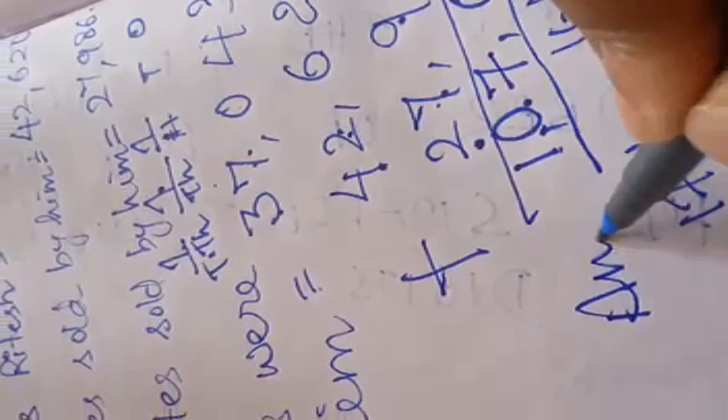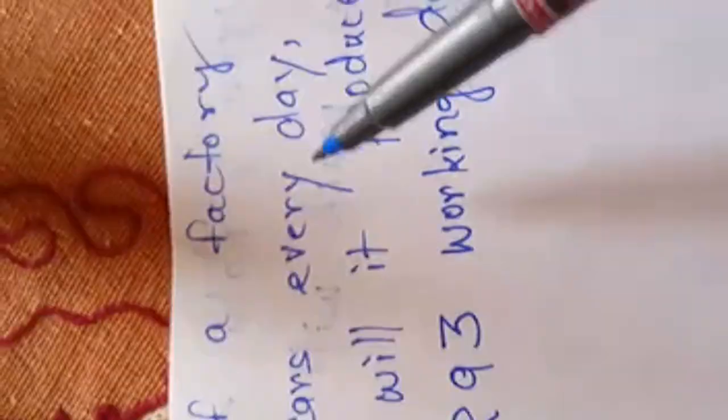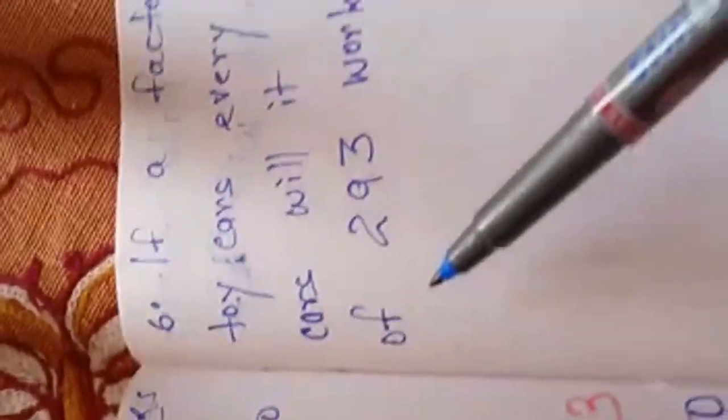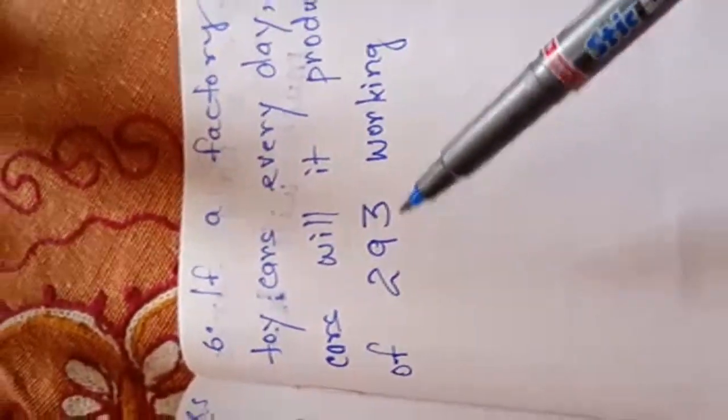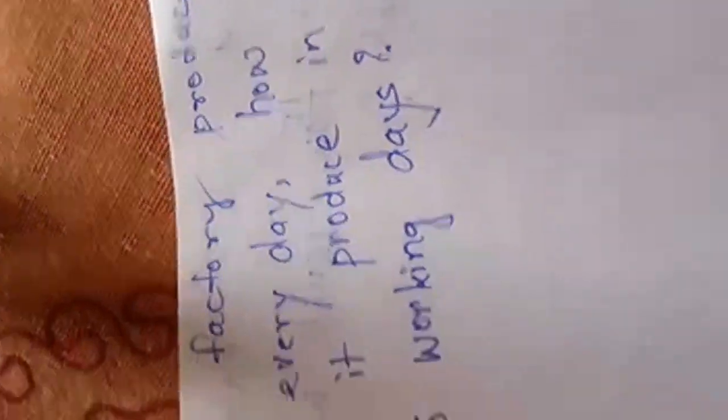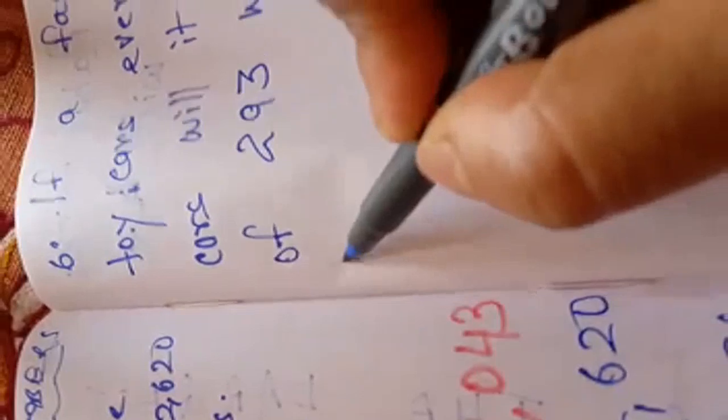Now, come to question number 6. It is also a problem sum. If a factory produces 1,285 toy cars every day, how many cars will it produce in a year of 293 working days? How many cars will it produce? One day the total number of car produced is 1,285. So, in 293 days means repeated addition, it is multiplication.